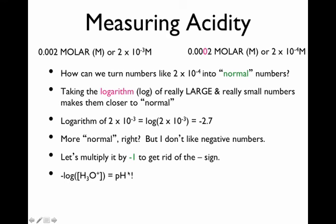The formula for pH is: find the molar concentration of H3O+ — that's what the square brackets around H3O+ mean — then take the logarithm of that molar concentration to get a more understandable number. Since this number is almost always negative, you multiply by −1 to get rid of the negative. Whatever number you get is a numerical description of acid concentration in units of pH.